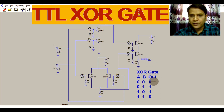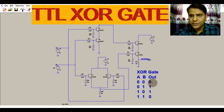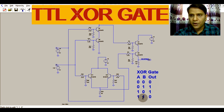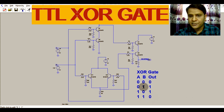In the XOR gate, if both inputs are logic low the output is logic low, or if both inputs are logic high the output is also logic low. However, if either one input is logic high, the output is logic high.